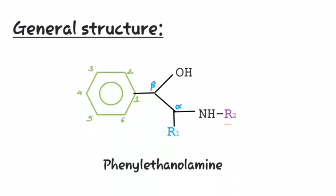In the terminal nitrogen, the size of alkyl group is responsible for the receptor selectivity. As the size of alkyl group increases, the activity at the alpha receptor decreases and the activity at the beta receptor increases. So, this was all about the SAR of phenylethanolamine. Thank you.